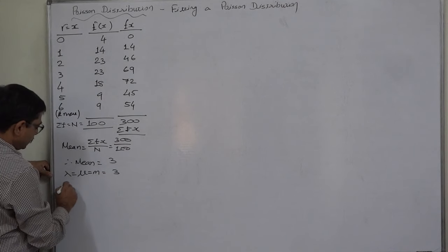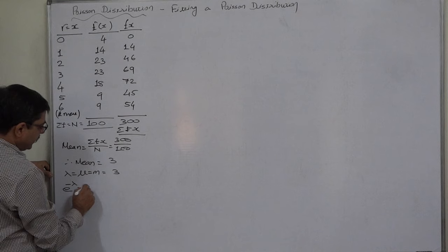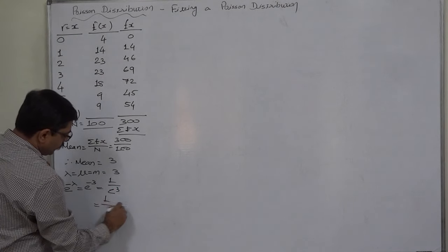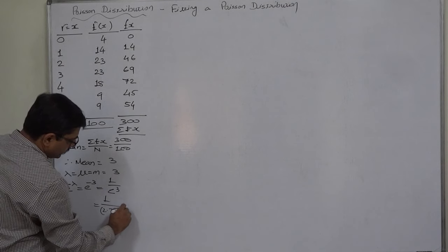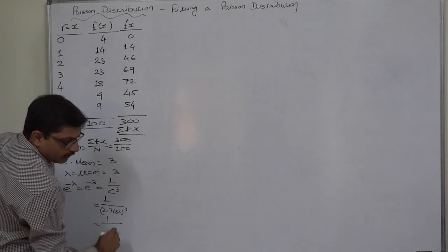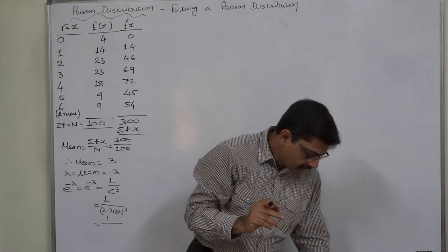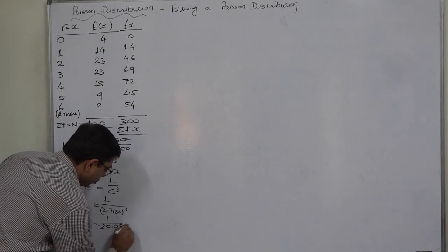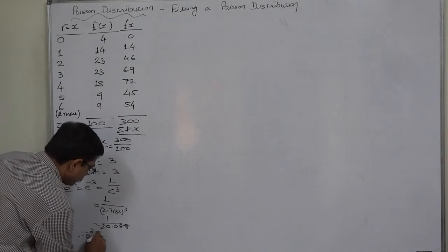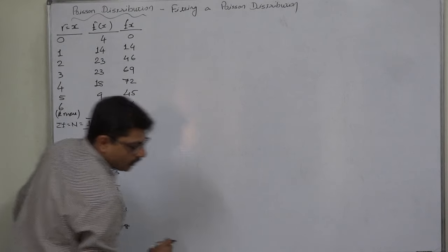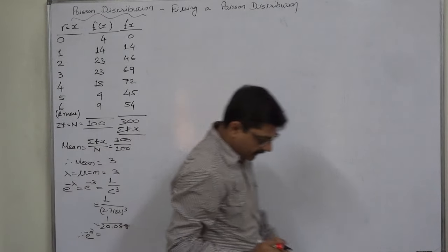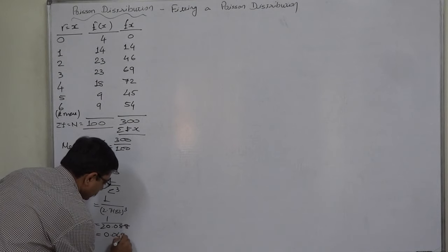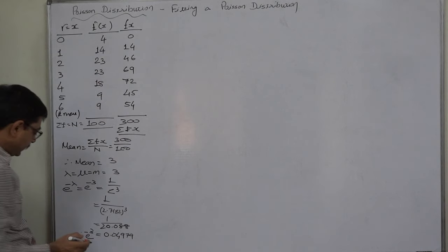Since the mean m equals 3, we need e raised to minus m, which is e raised to minus 3. That equals 1 divided by e raised to 3, which is 1 divided by 2.71828 raised to 3, giving 1 divided by 20.0855. Therefore, e raised to minus 3 comes to 0.04979. This has been calculated using a calculator.